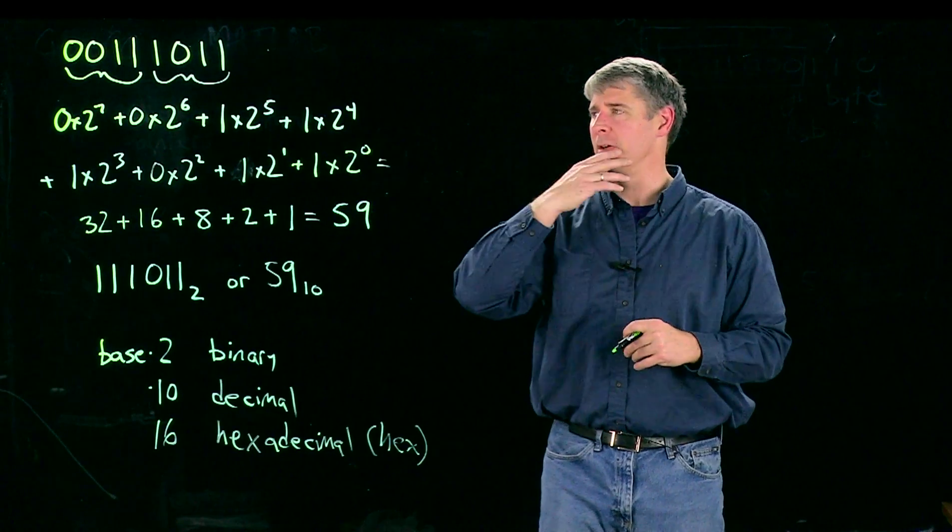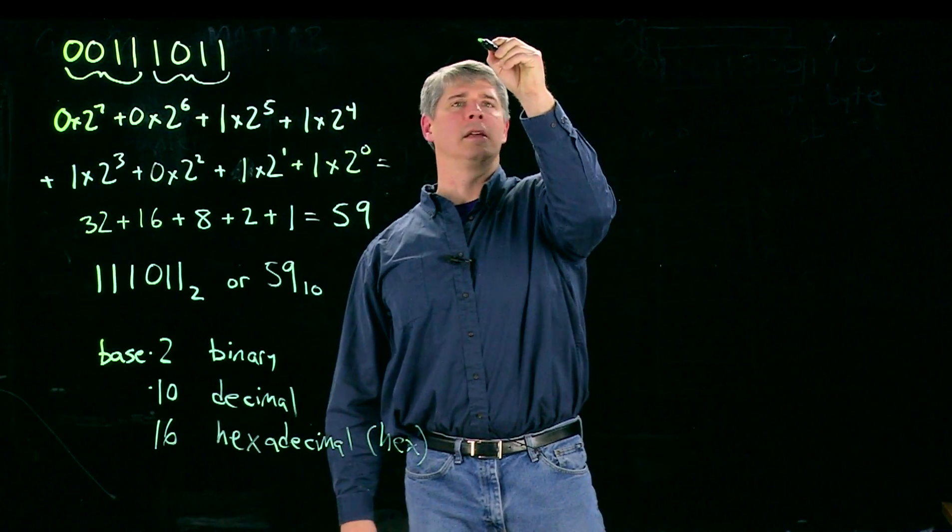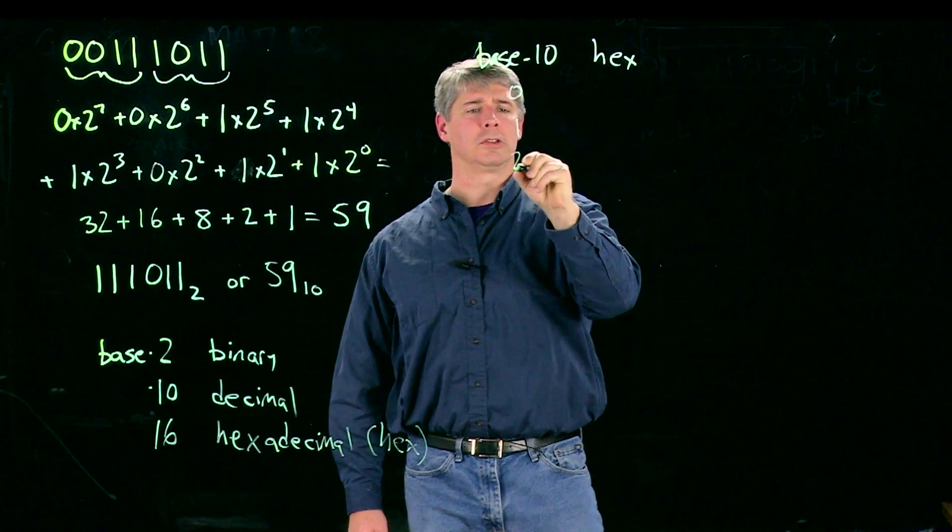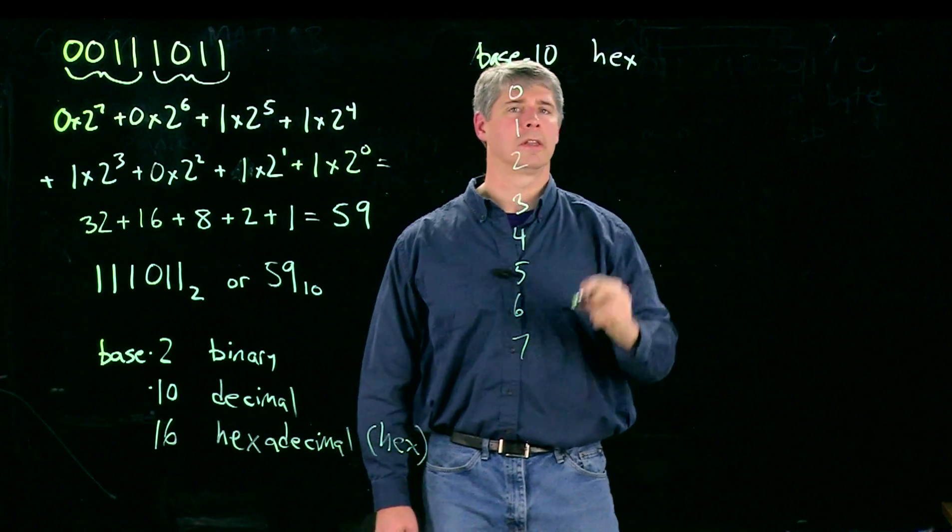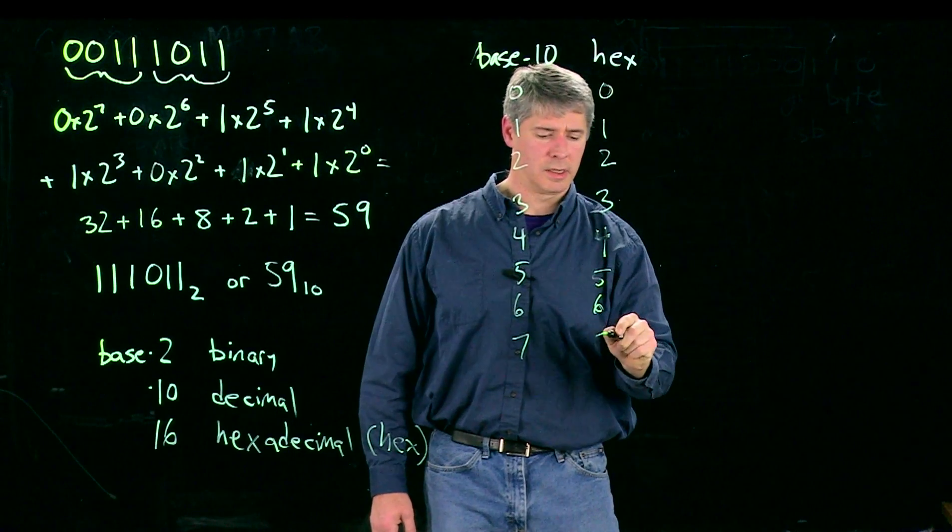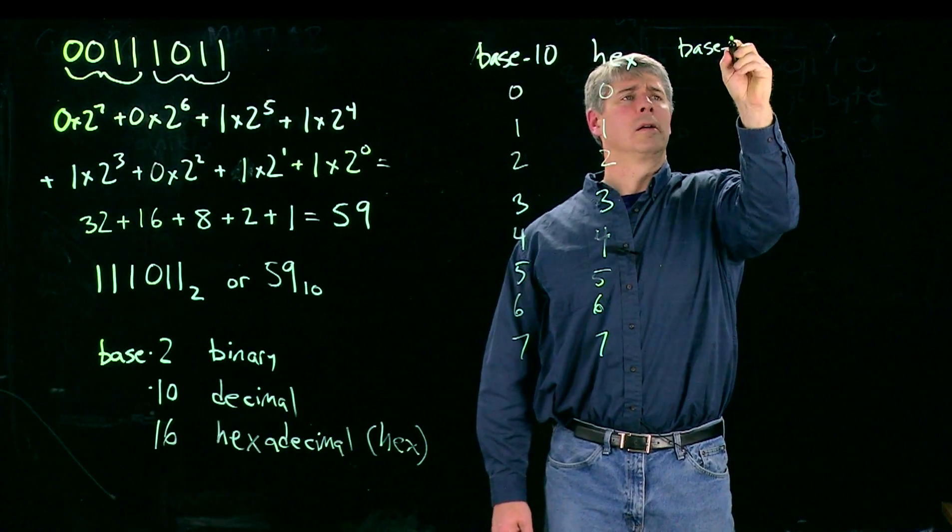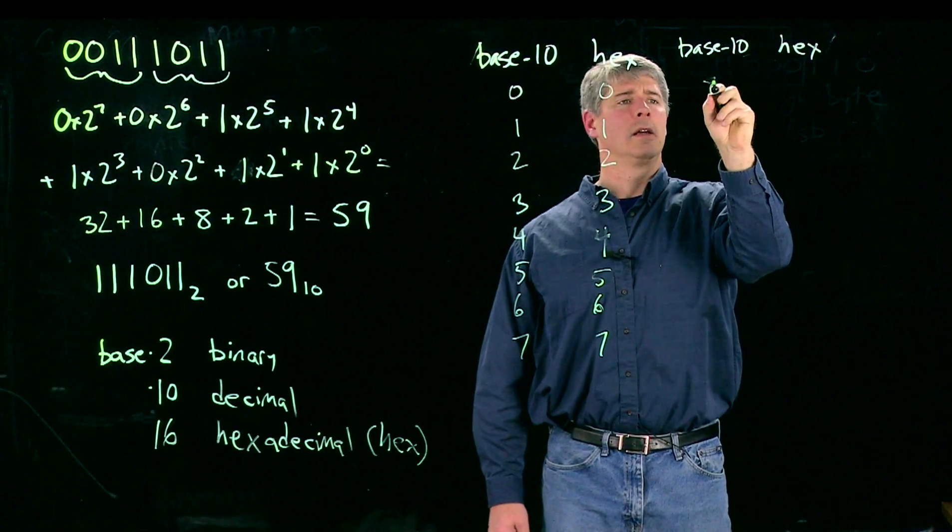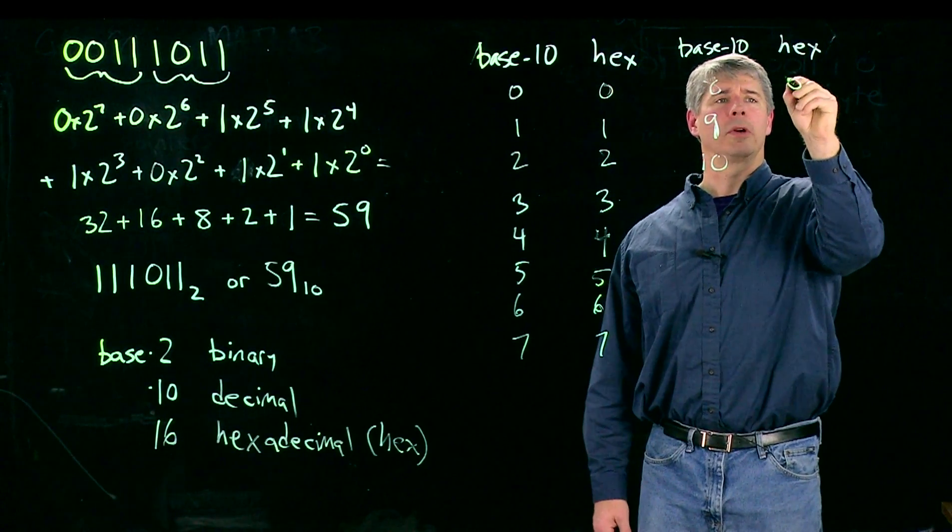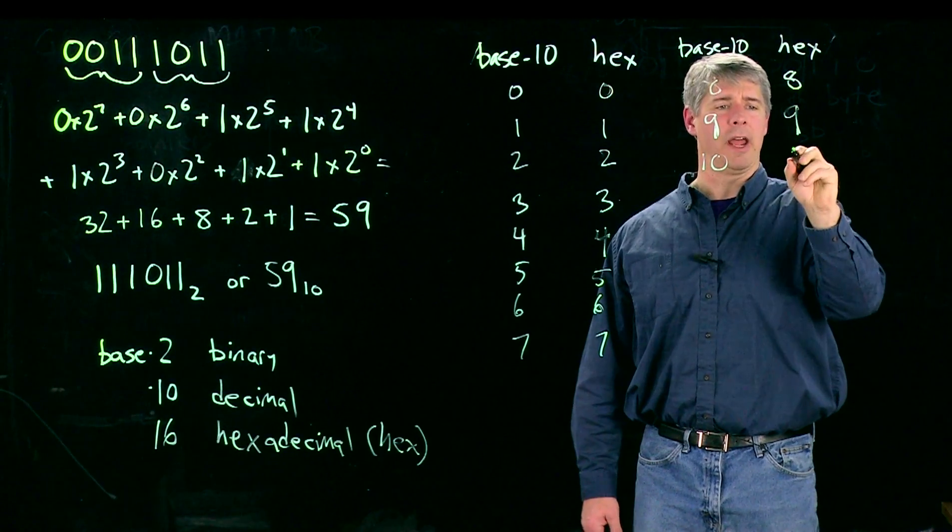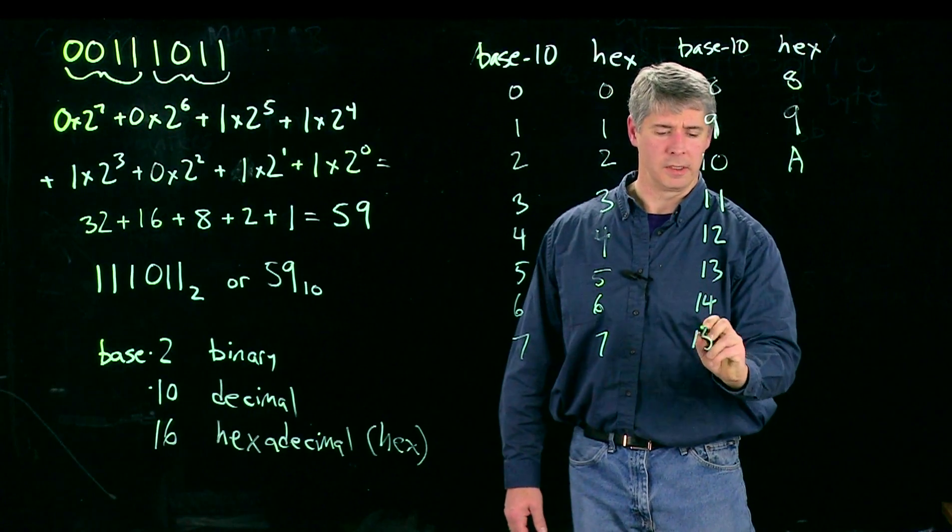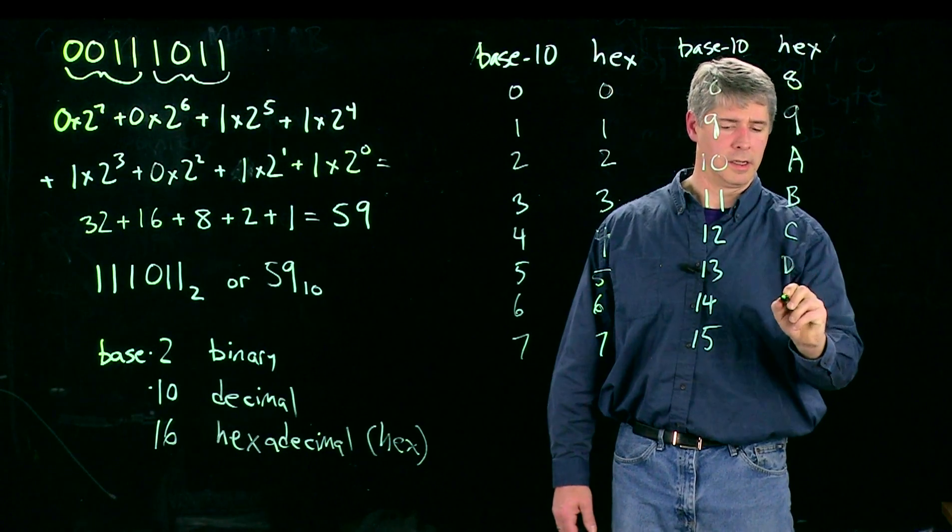So let's go ahead and write a table now of those 16 hex values. Here's the base 10, here's the hex. We have 0, 1, 2, 3, 4, 5, 6, 7, and the hex is just the same: 0, 1, 2, 3, 4, 5, 6, 7. And continuing, we've got 8, 9, and 10, which takes two digits to represent in base 10. Here we're going to represent it in hex by the letter A. And then we've got 11, 12, 13, 14, 15, and over here we've got B, C, D, E, F.